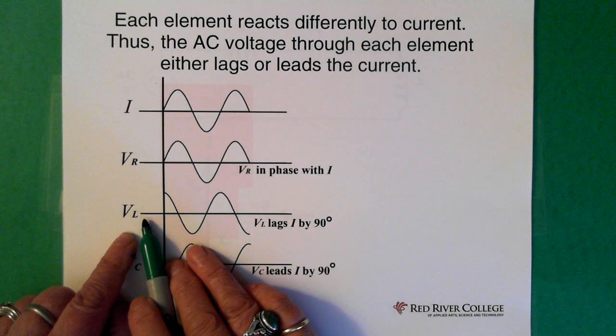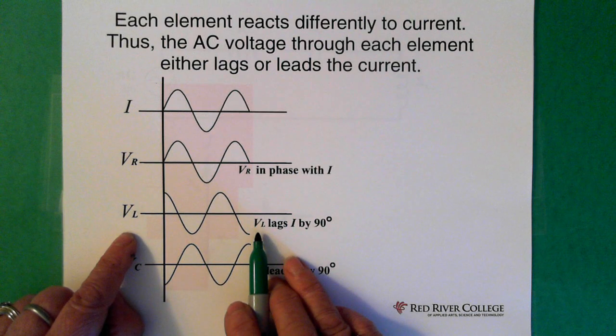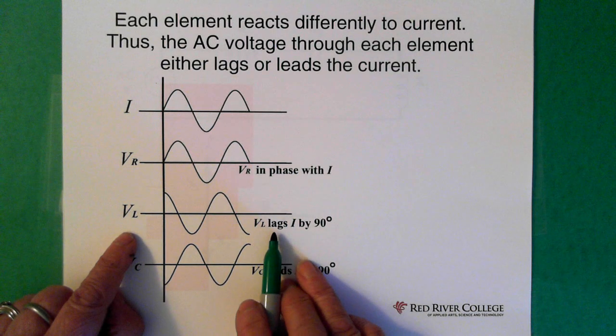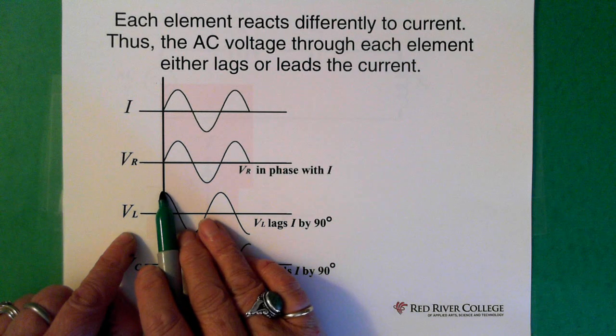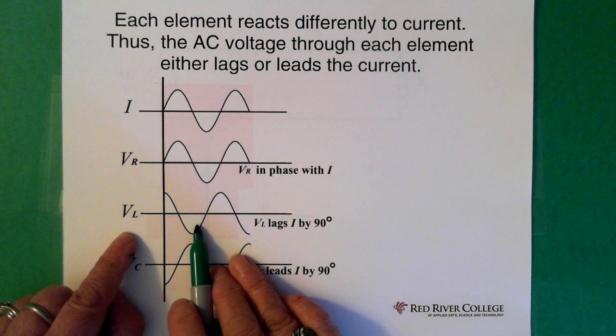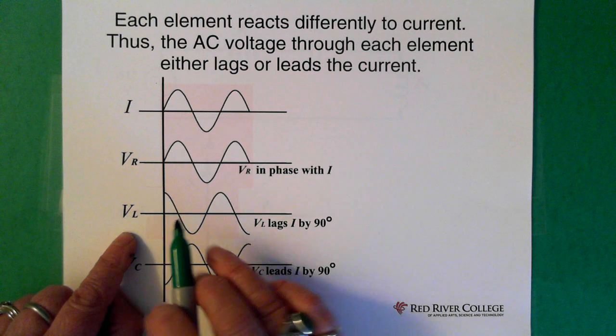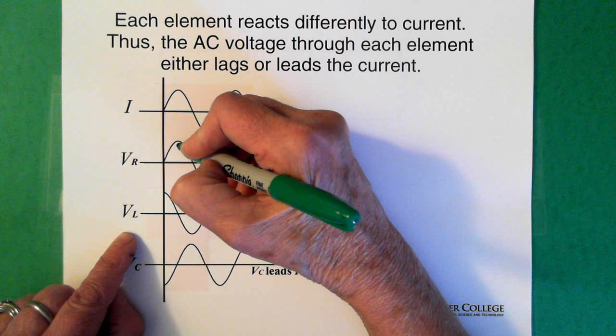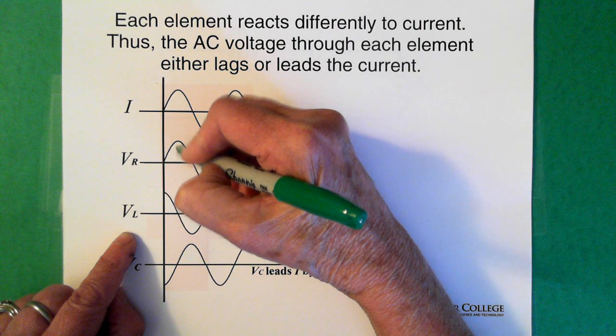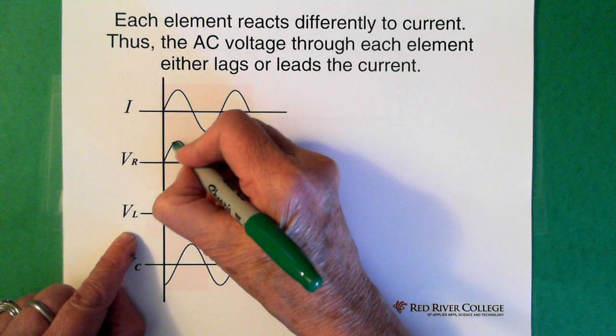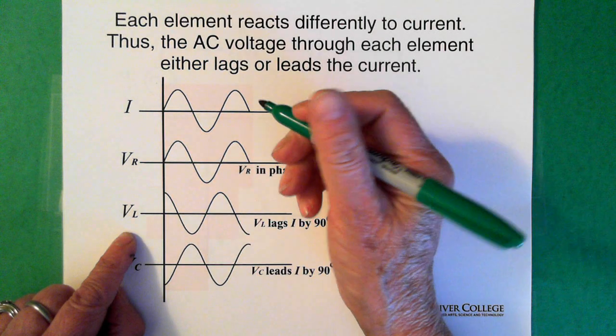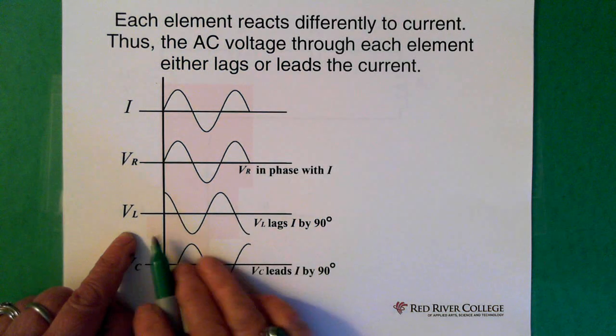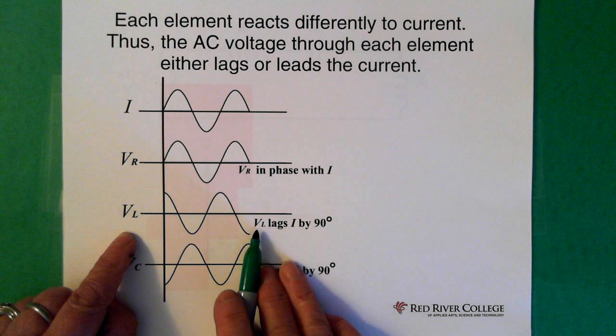For an inductor, the voltage across the inductor lags the current by 90 degrees. So you can see here that it's just behind. It's behind. And we know that this point here is 90 degrees because this whole piece is 360. So the voltage across the inductor lags by 90 degrees.